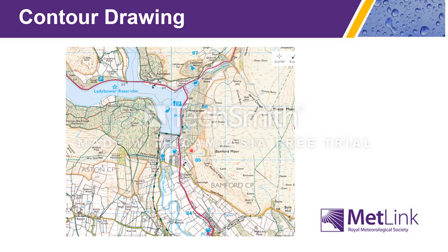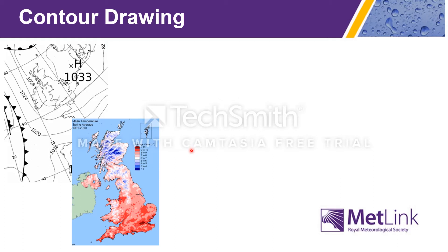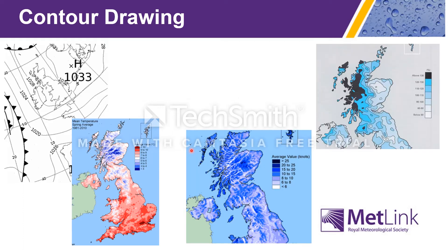But contour maps are useful for many things other than height. In meteorology, isobars link places where the atmospheric pressure is the same. We use isotherms for temperature, isotachs for wind speed, and isohyets for rainfall.